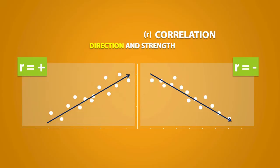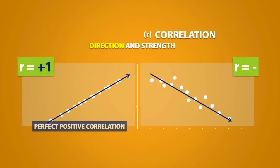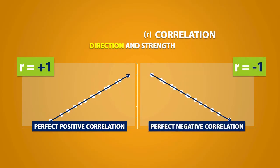If we have an upward slope, and the data points follow a perfect straight line, then r is equal to positive 1, and this is called a perfect positive correlation. In contrast, if we have a downward slope, and the data points follow a perfect straight line, then r is equal to negative 1, and this is called a perfect negative correlation.